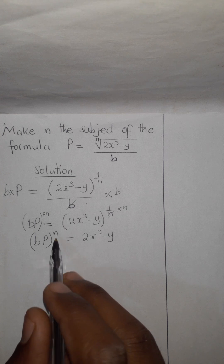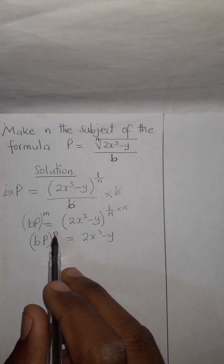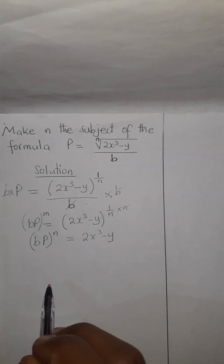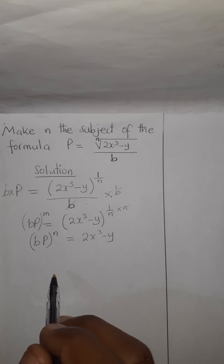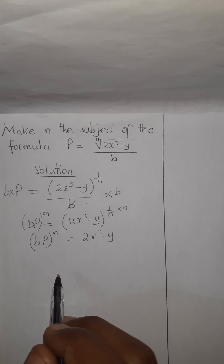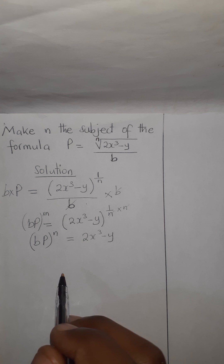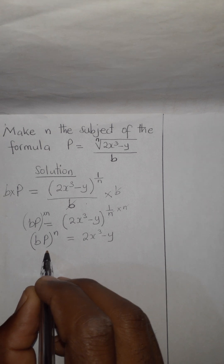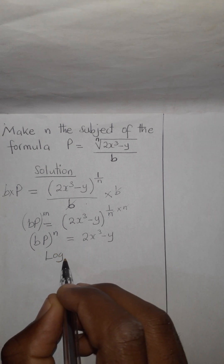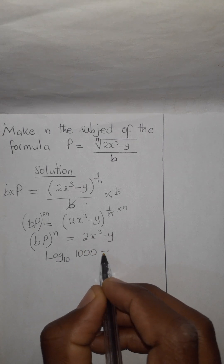Our big deal is to make n the subject of the formula. Whenever you have been asked to make a power the subject, obviously you have to introduce log. Why log? Because log of a number tries to find the power. That means logarithm of 10 — log 10 — we are trying to find the power of 10 that can give 10. For example, you can say log base 10 of 1000 is equal to what?